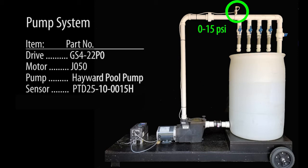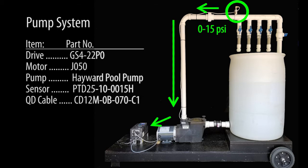This 15 psi pressure sensor is providing pressure values back to the GS4 drive as a 0 to 10 volt signal, where 10 volts is 15 psi.